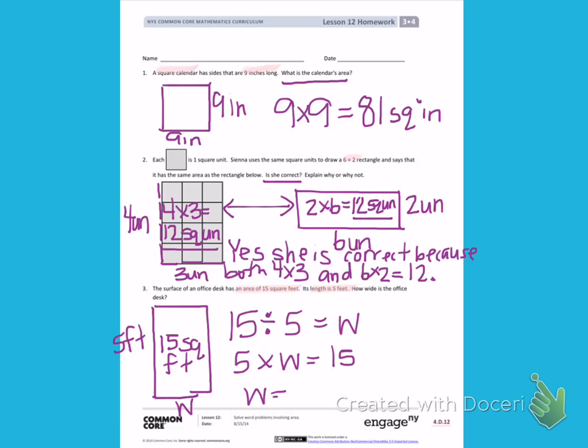On your own, solve for W and make sure you label it with feet.